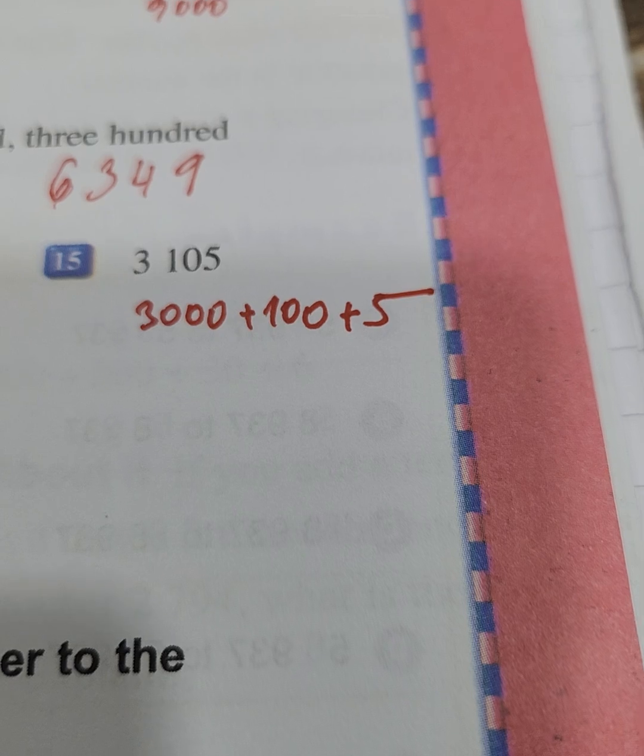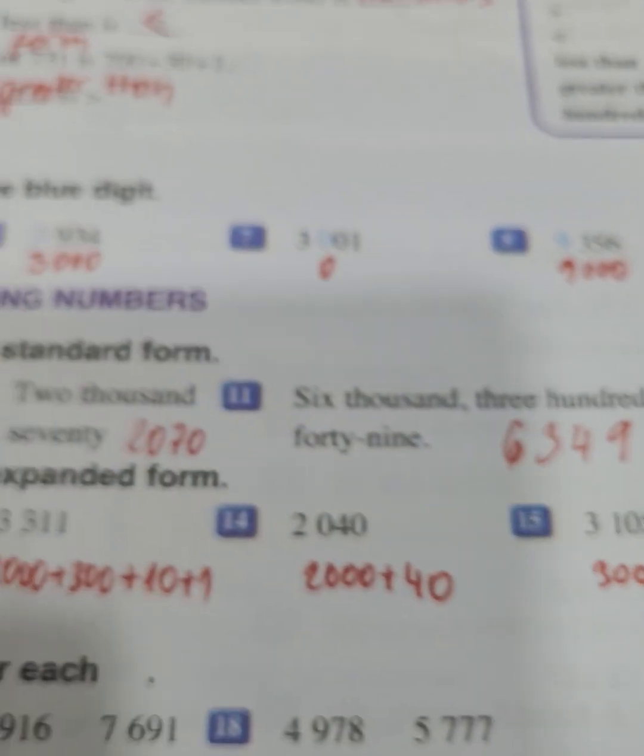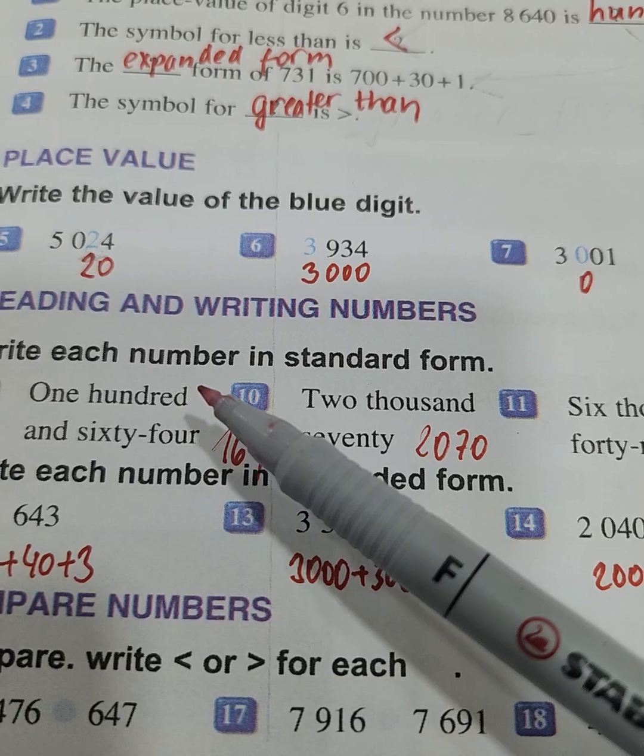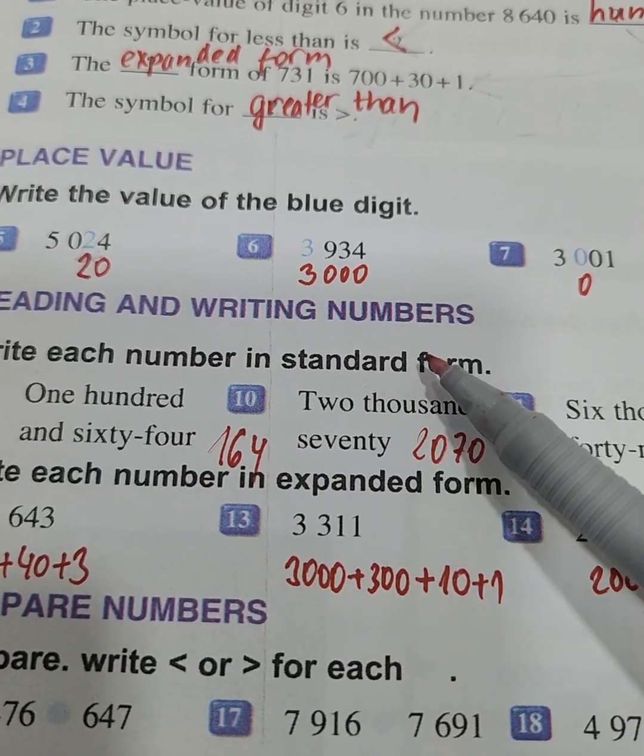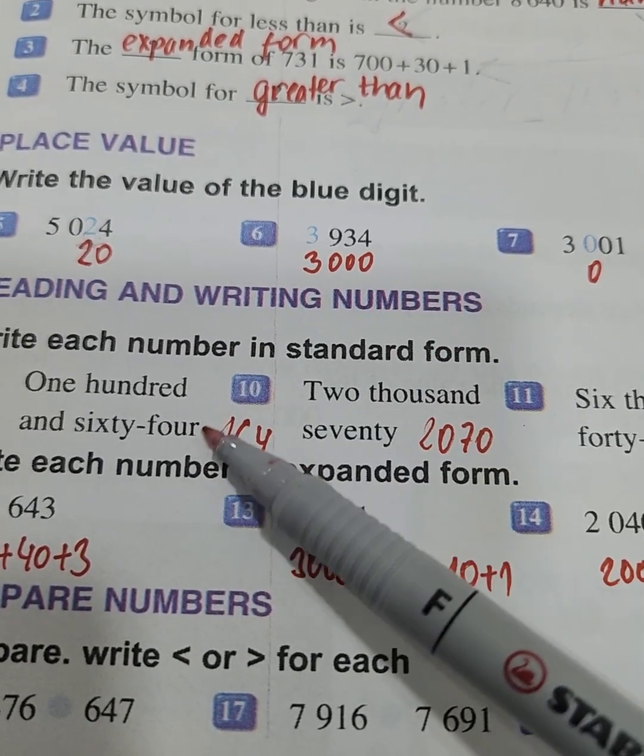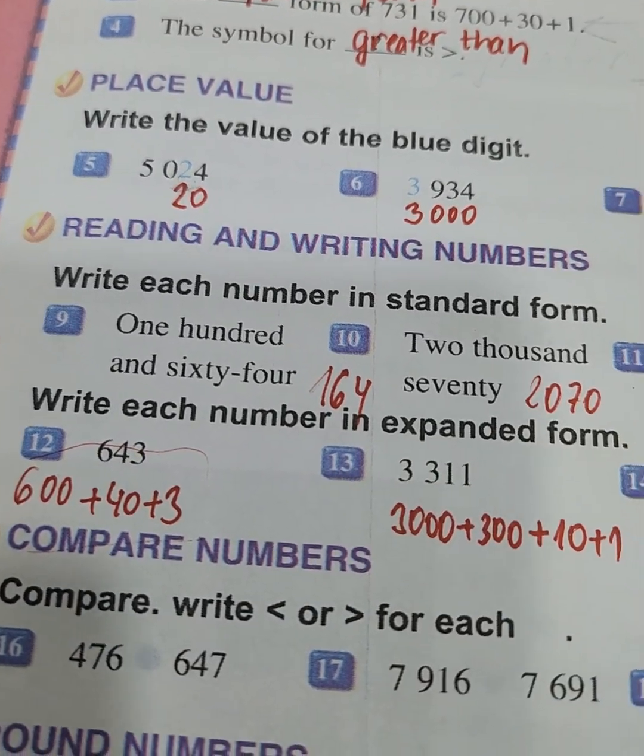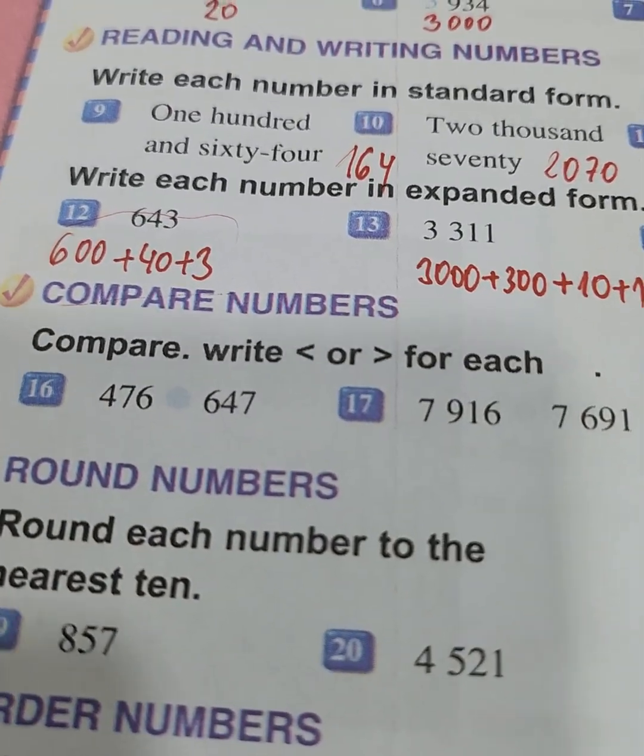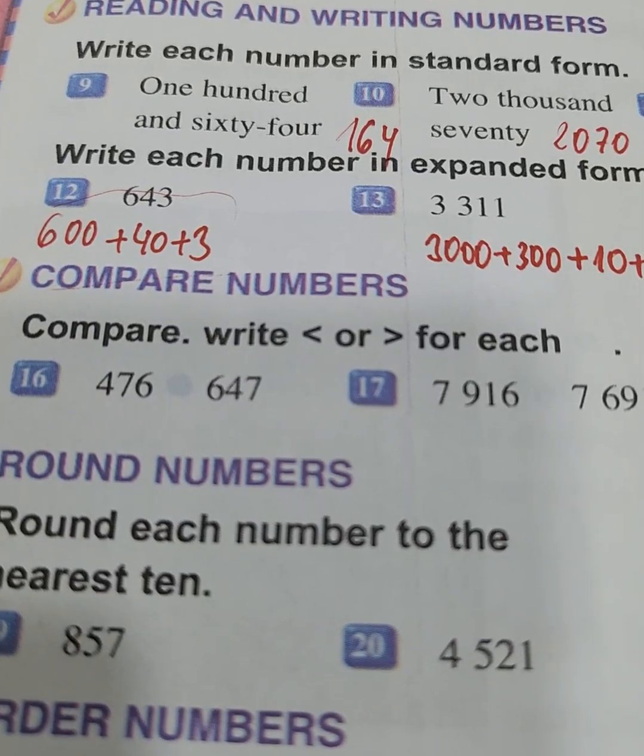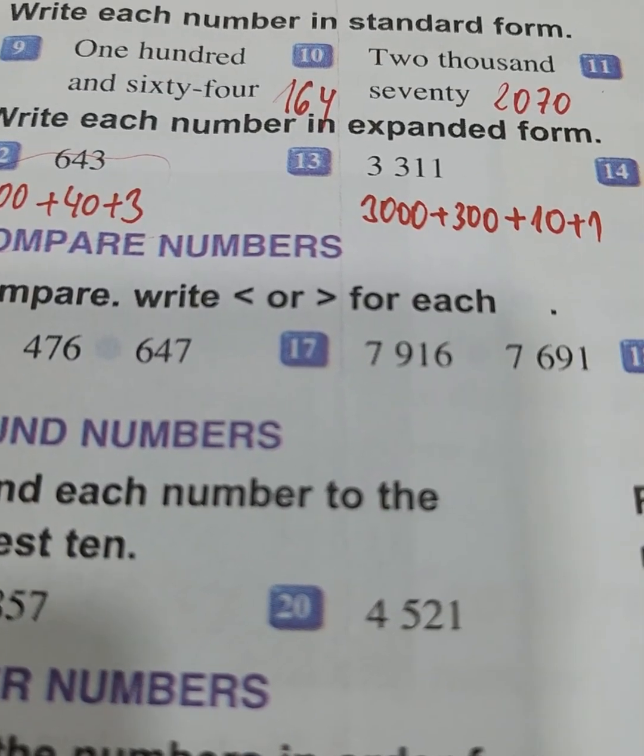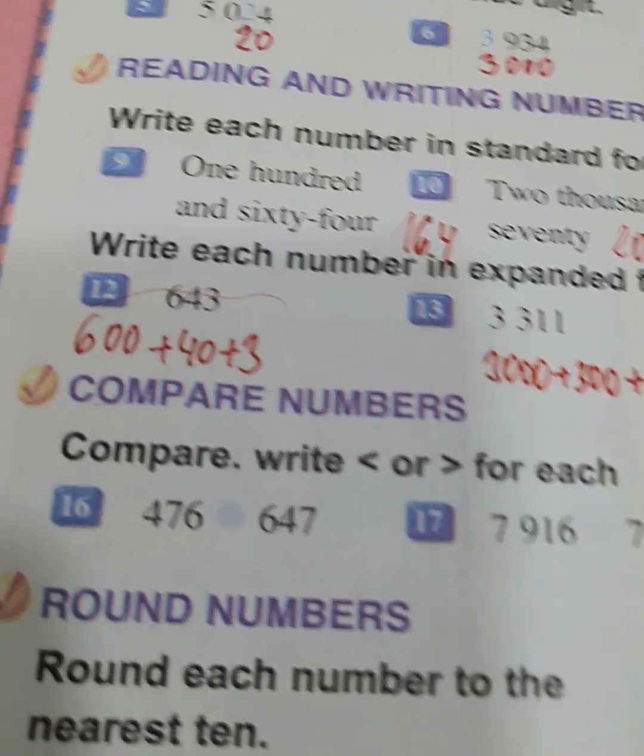So this was expanded form. And here, how we write number here was in standard form. Standard form is this and expanded form is this. Now we have the exercise compare numbers. Compare and write greater than or less than for each place.